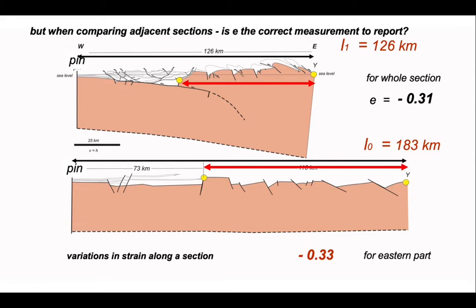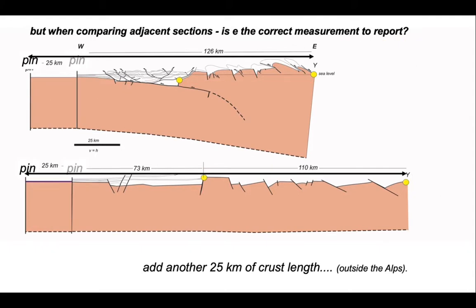With that in mind, let's imagine re-siting our pin 25 kilometres further out to the west, ahead of the Alps. So adding another 25 kilometres of crust length to both the final state section at the top and the restored section below. What's the effect of this on our numbers?